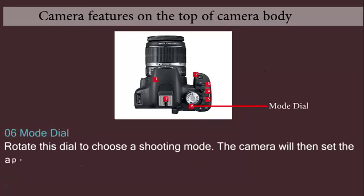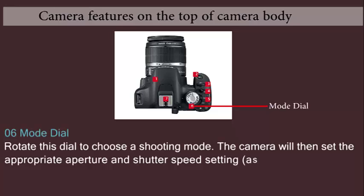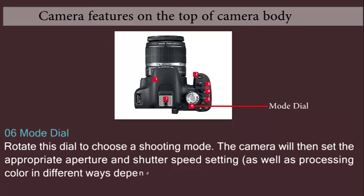Mode dial: Rotate this dial to choose a shooting mode. The camera will then set the appropriate aperture and shutter speed setting, as well as processing color differently depending on the mode.